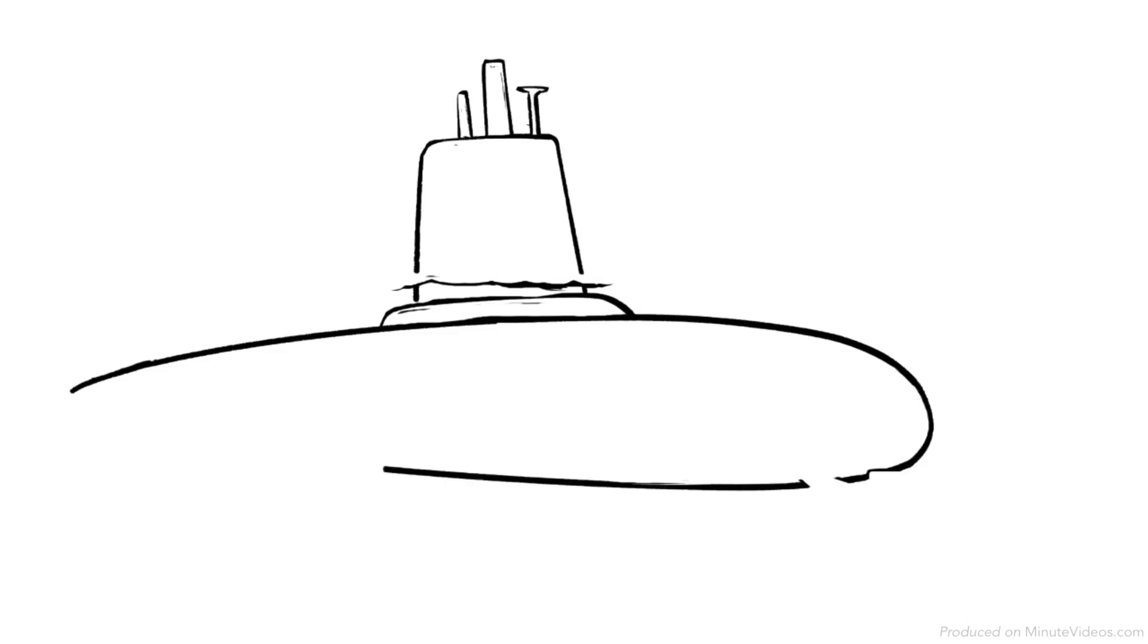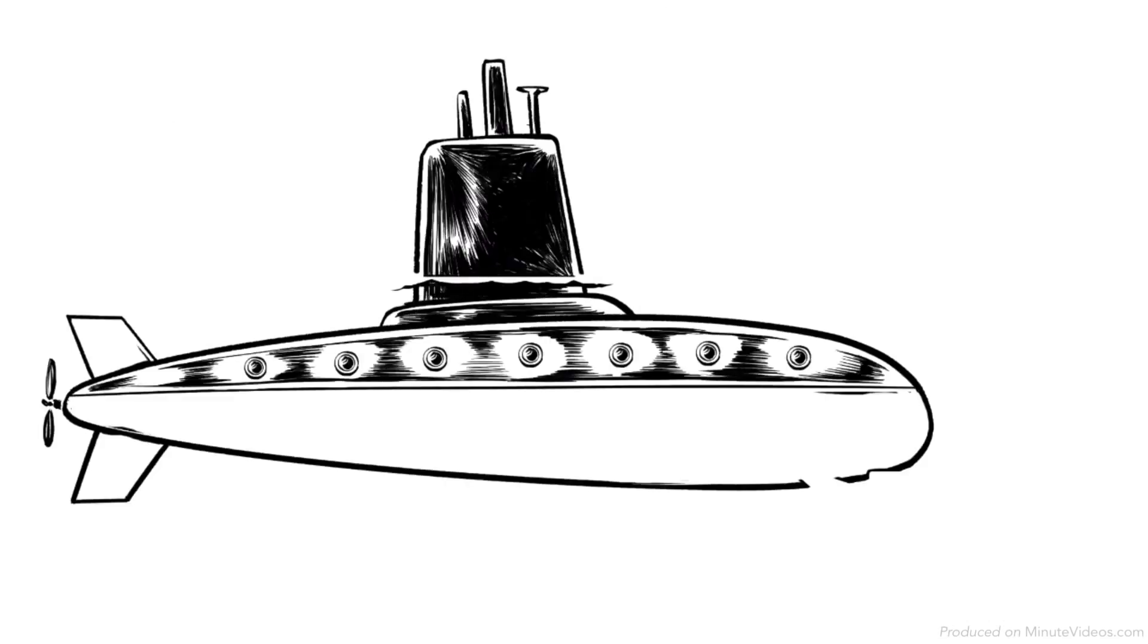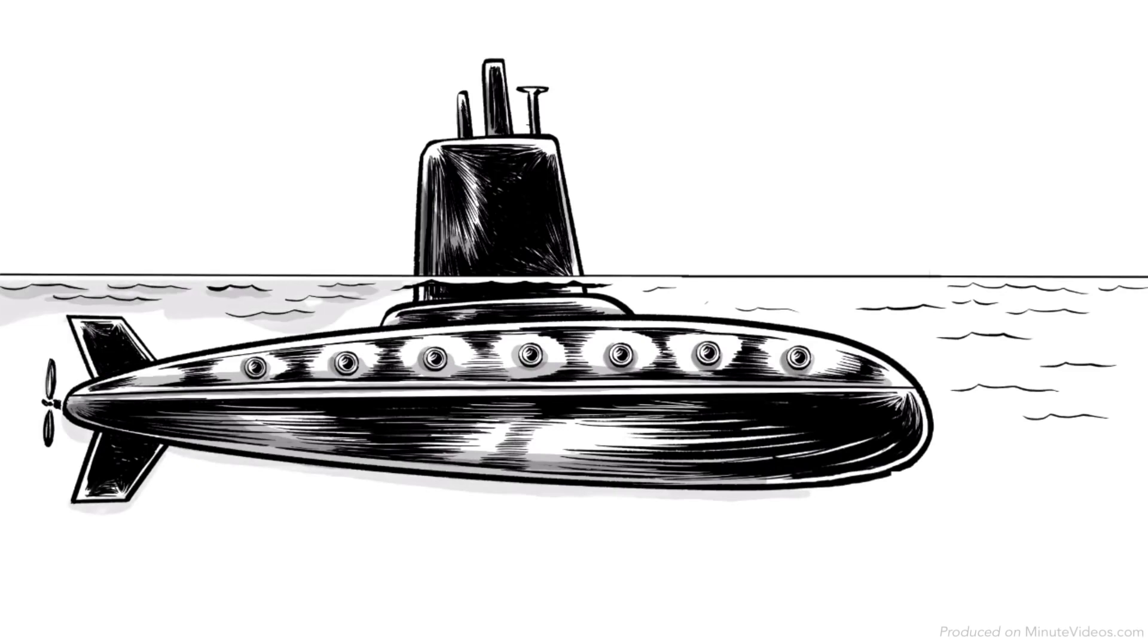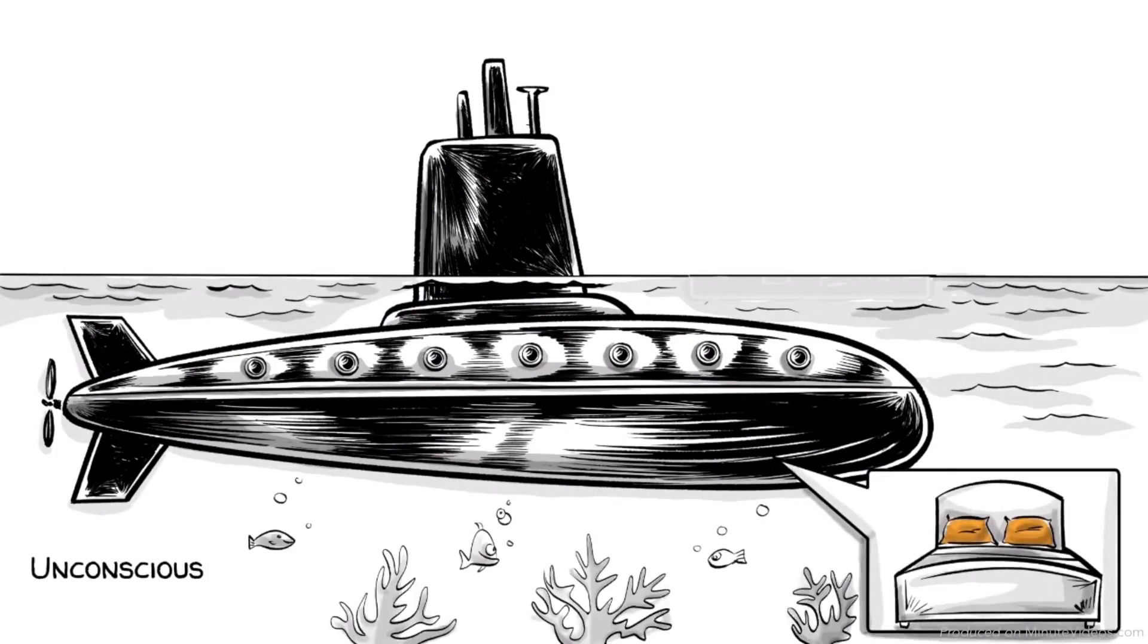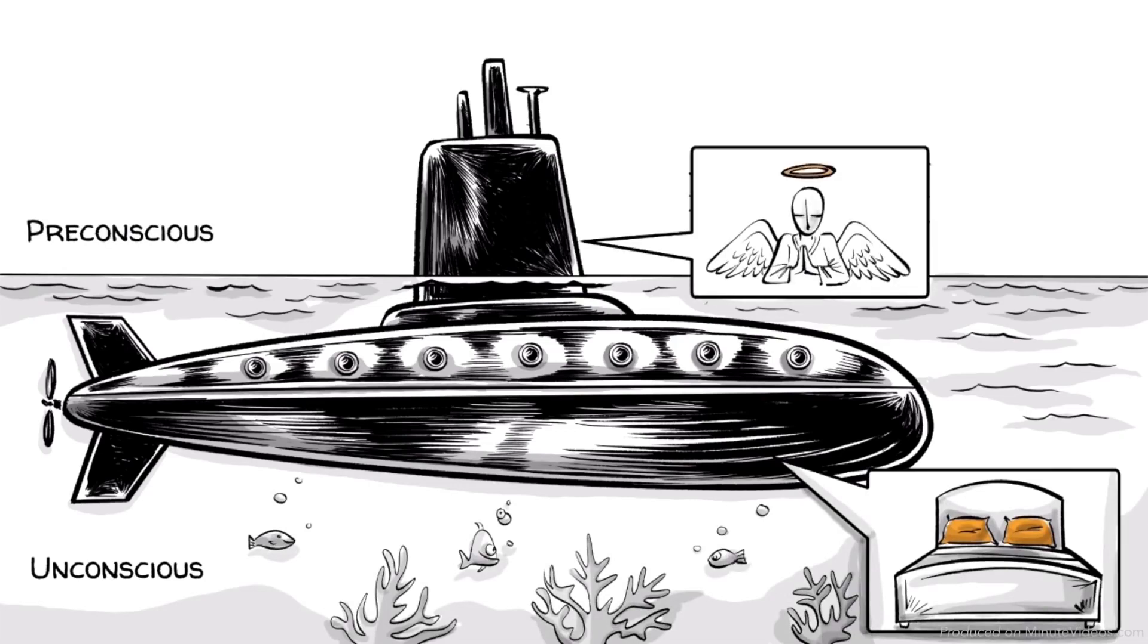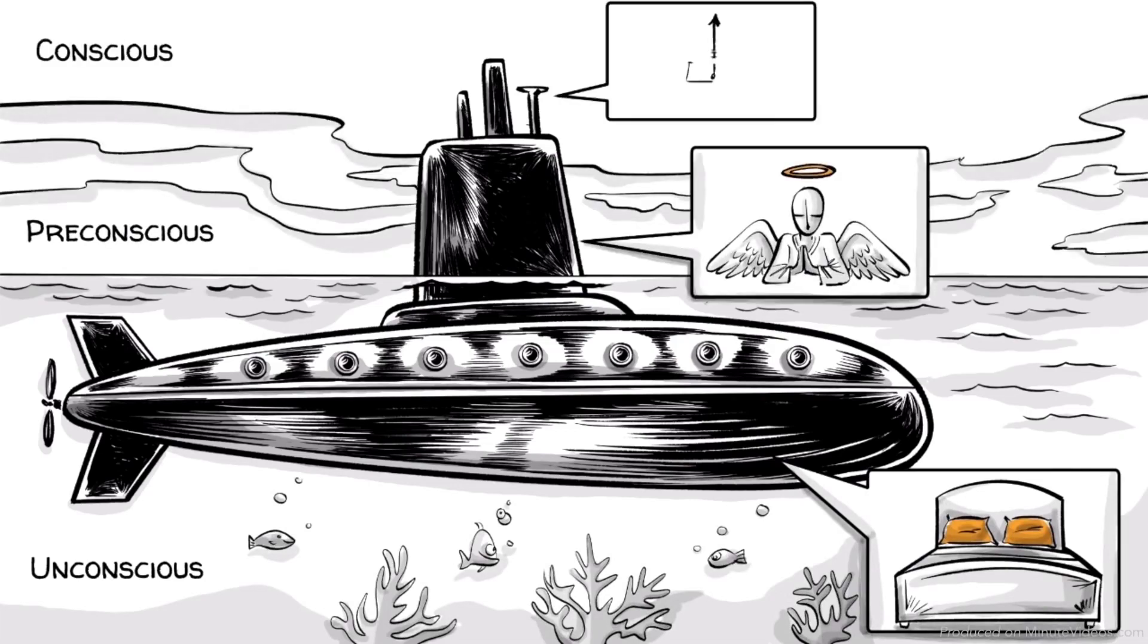Freud claimed that our mind operates in three spheres, which we can imagine as a submarine. The unconscious level operates the id. The preconscious level operates the superego. The conscious and preconscious levels operate our ego.